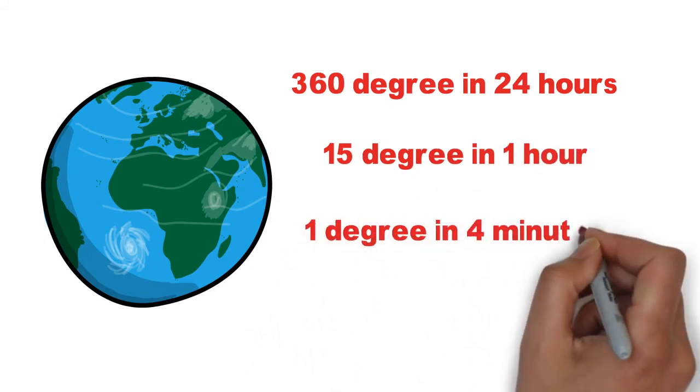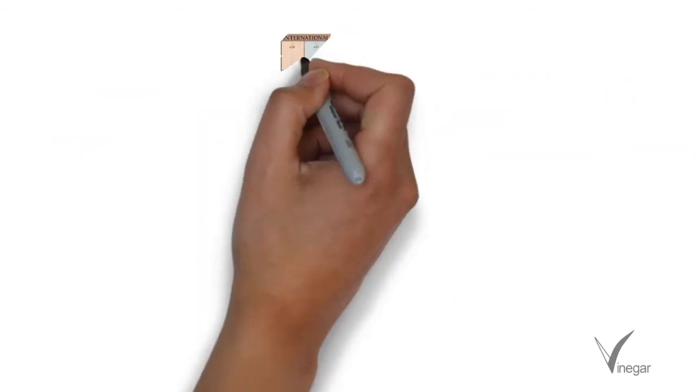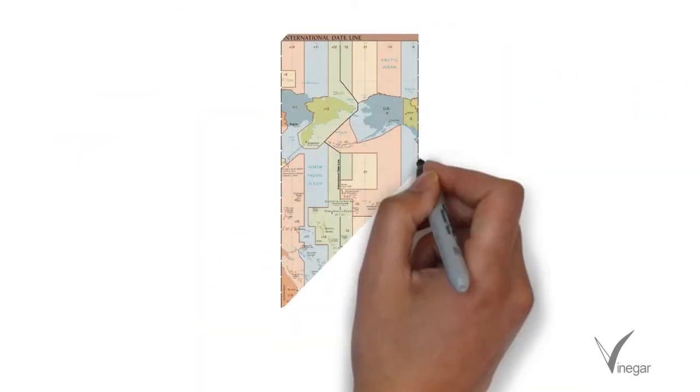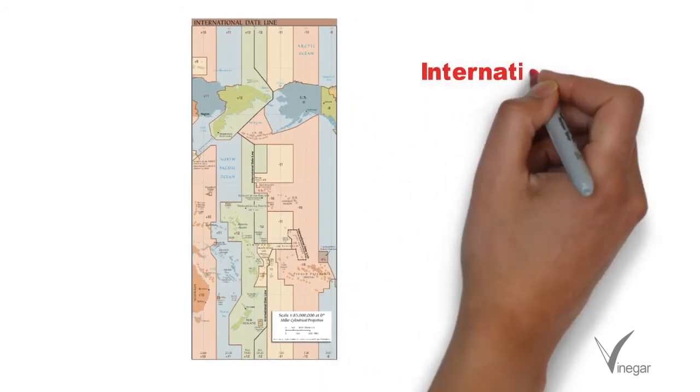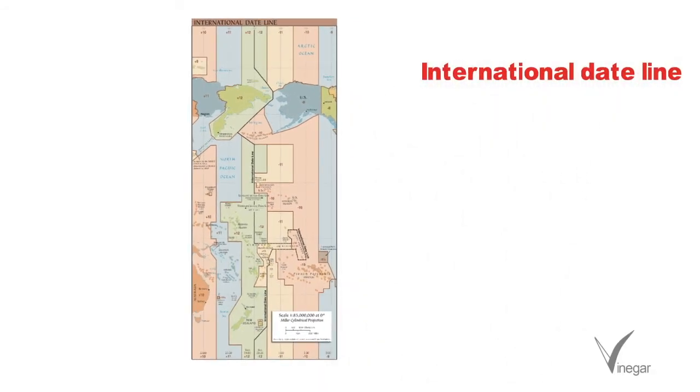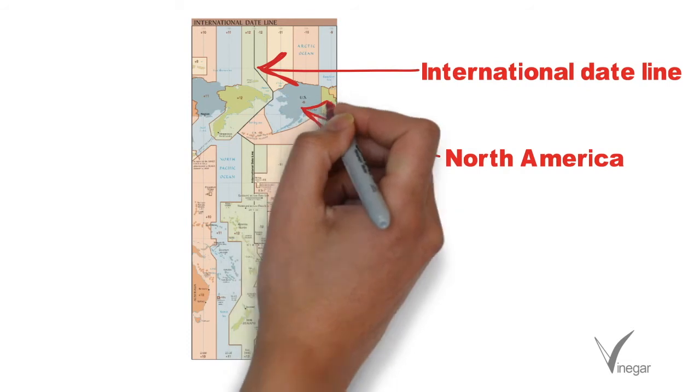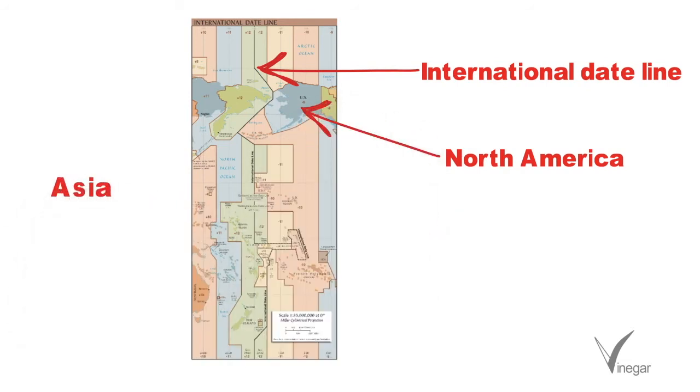Since we had to decide dates also, we needed a longitude which when crossed led to change in date. This is called the international dateline. As you can see it is not a straight line and it has been done so that it does not pass through any country, as it would have been an administrative headache if dates kept on changing within a country.